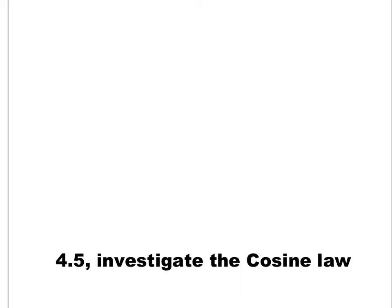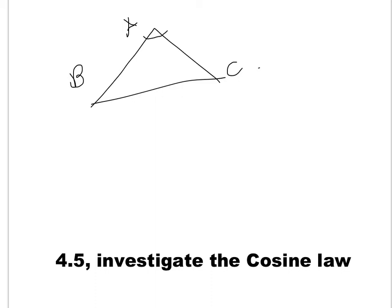But before I go any further, remember: in any triangle ABC, if you have two angles and another side which is in front of any one of these angles — meaning either side BC or side AC — because they are in front of the given angles, you can use sine law. This is what we call AAS: angle, angle, side.